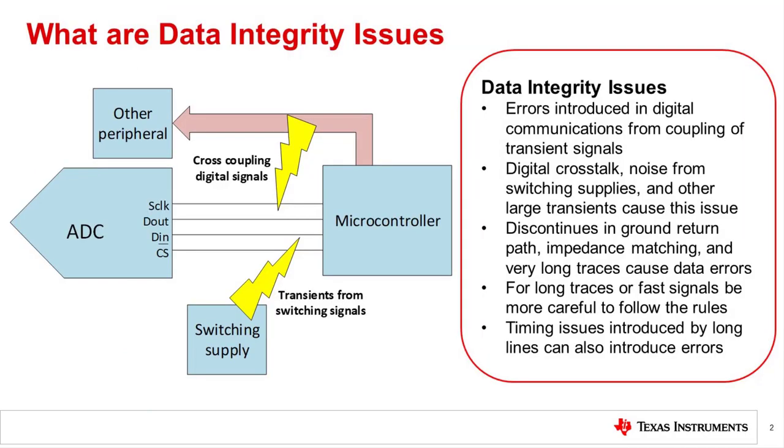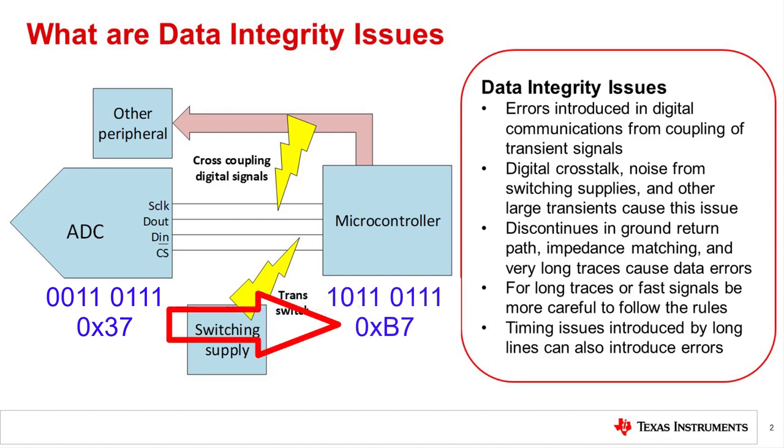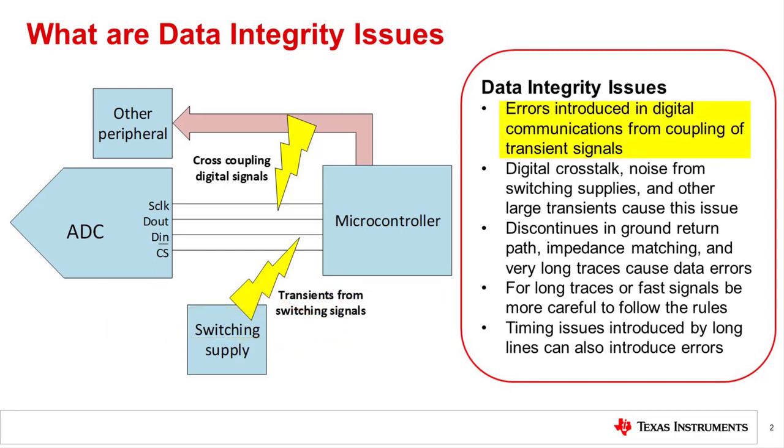Let's start by defining what data integrity issues are and giving a few simple examples. A data integrity issue occurs when data being transmitted from one device to another is corrupted. The corrupted digital signal that is received will contain one or more errors in the data.